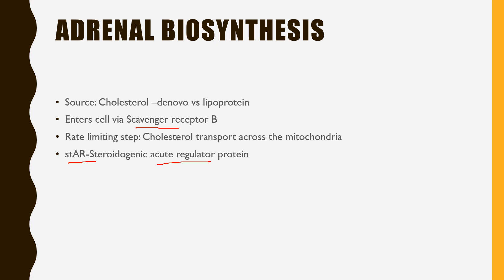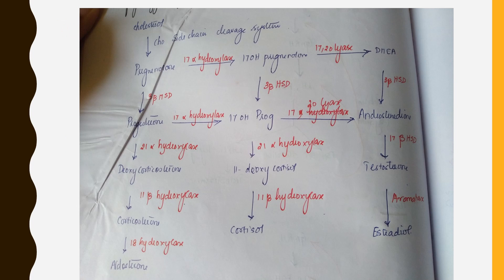Once it has entered into the inner membrane, the cholesterol side chain cleavage system cleaves it into pregnenolone. From here, the first pathway points to aldosterone synthesis, the second to cortisol synthesis, and the last deals with sex steroids. Only 4 enzymes need to be remembered: 17-alpha hydroxylase, 3-beta hydroxysteroid dehydrogenase, 21-alpha hydroxylase, and 11-beta hydroxylase.